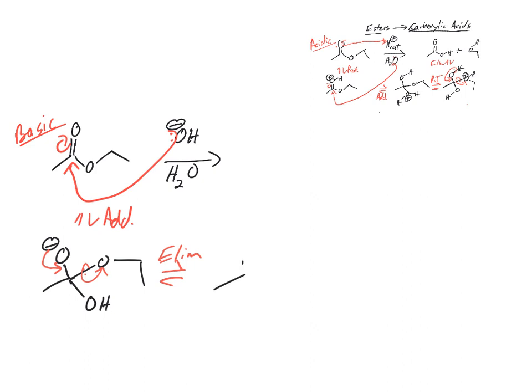What happens here, we do an elimination step that kicks that out. So elimination, where you're going to make now is a carboxylic acid, but you're not done yet. Let's make sure we balance our charges. You have a carboxylic acid and you have an ethoxide, ethoxide here.